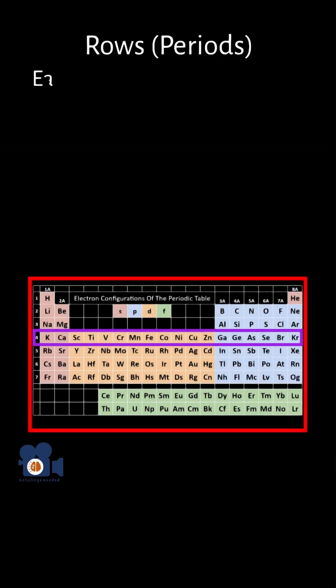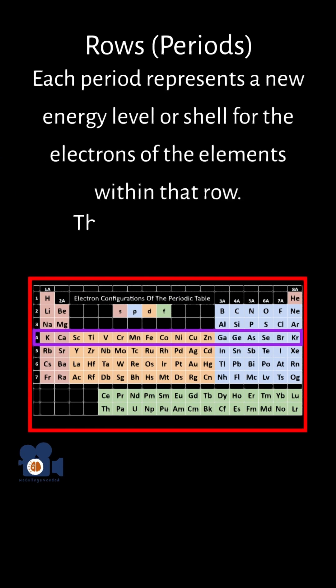The periodic table is divided into rows called periods. Each period represents a new energy level or shell for the electrons of the elements within that row. There are a total of seven periods in the periodic table.